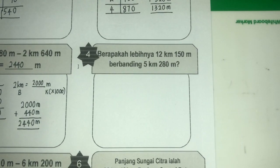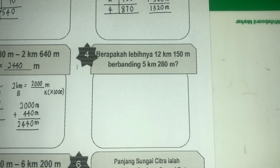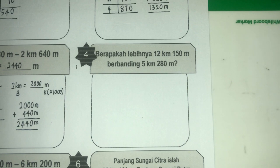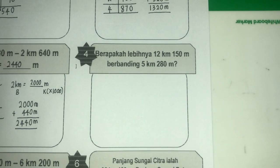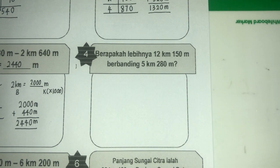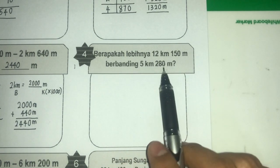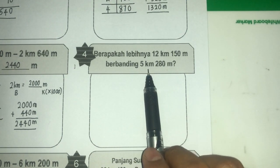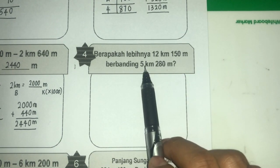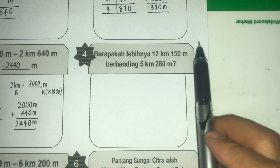Kita teruskan pula dengan soalan yang keempat. Berapakah lebihnya 12 kilometer 150 meter berbanding 5 kilometer 280 meter? Bila kita sebut berapakah lebihnya, bermaksud dia nak tahu berapa banyak yang lebihnya nombor ni jika dibanding dengan nombor ni. Nombor ni besar — 12 kilometer lagi panjang daripada 5 kilometer.